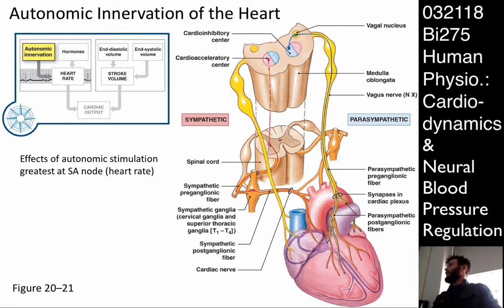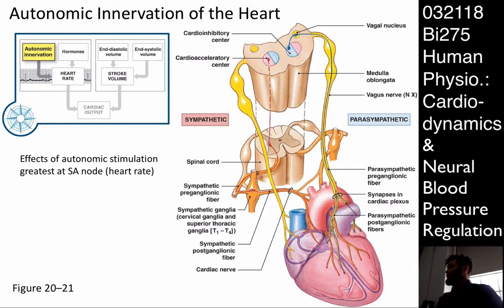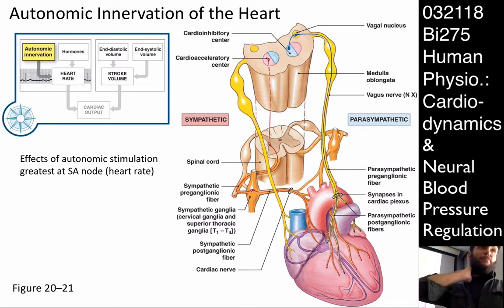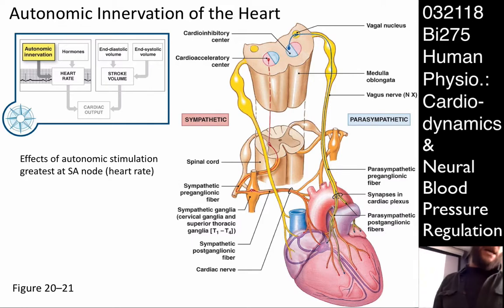The vagus nerve carries, among other things, parasympathetic efferent fibers — GVE fibers, general visceral efferent fibers — along it. It sends a branch right to the heart where there's a synapse in what's called the cardiac plexus. A plexus is simply a mixing of nerves that distributes various properties across individual fibers. There's a synapse on the surface of the heart, and then it comes into contact with the same elements in the conduction system and slows the heart rate down.